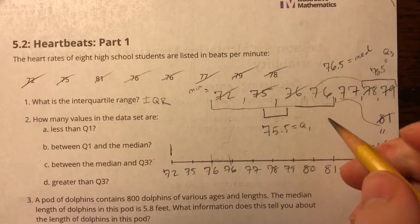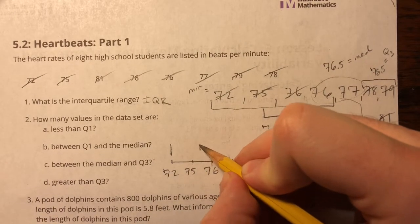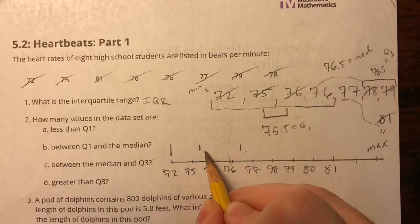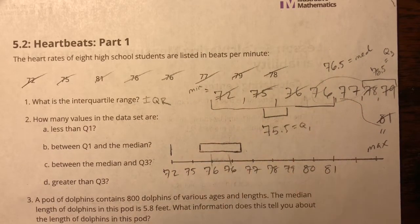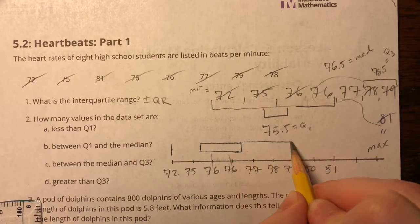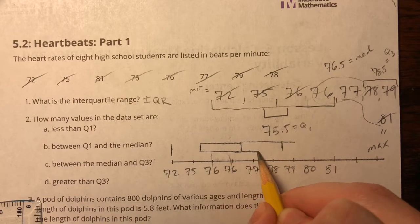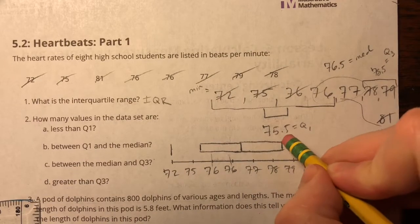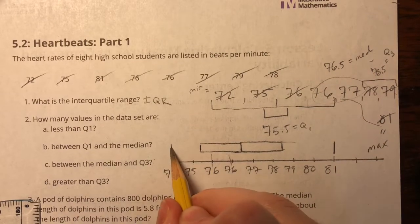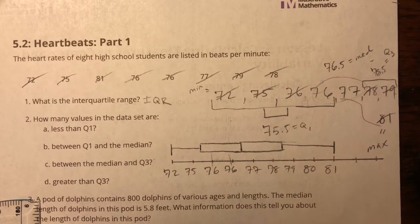So my min is at 72. My Q1 is at 75.5. My median is at 76.5. My Q3 is at 78.5. And my max is at 81.